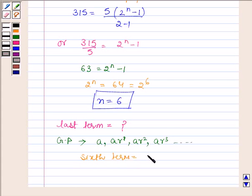And the 6th term is given by ar^5. So the first term is a, second term is ar^1, third term is ar^2, so the 6th term is given by ar^5.